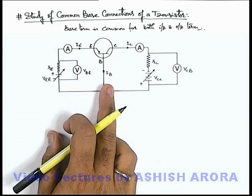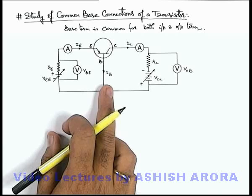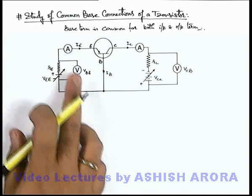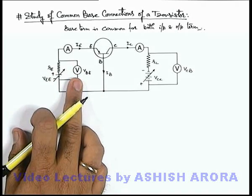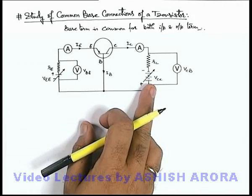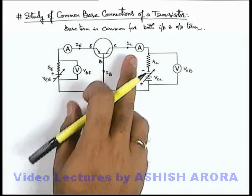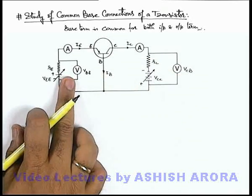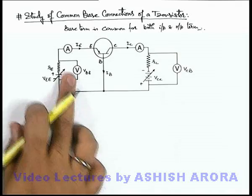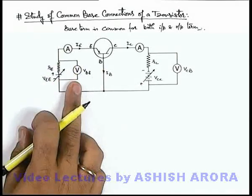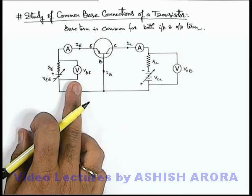When we study the transistor as an amplifier, we use a time-varying signal. So we must have a good idea about the variation of emitter current with base-emitter voltage corresponding to different values of base-collector voltage, as well as the variation of collector current with base-collector voltage for specific values of emitter current. This variation helps us a lot in understanding the transistor as an amplifier.